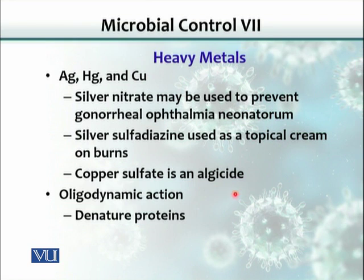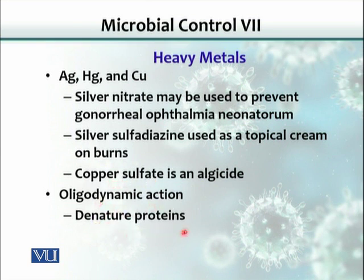Algae is a green substance floating in ponds, which you might have noticed. Algae secrete toxins and can kill animals, especially those that drink the water. So in order to prevent the growth of algae in water ponds, we use copper sulfate. The mechanism of action of all these heavy metals is that they denature proteins, and they are required in very small quantities — this is called oligodynamic action.